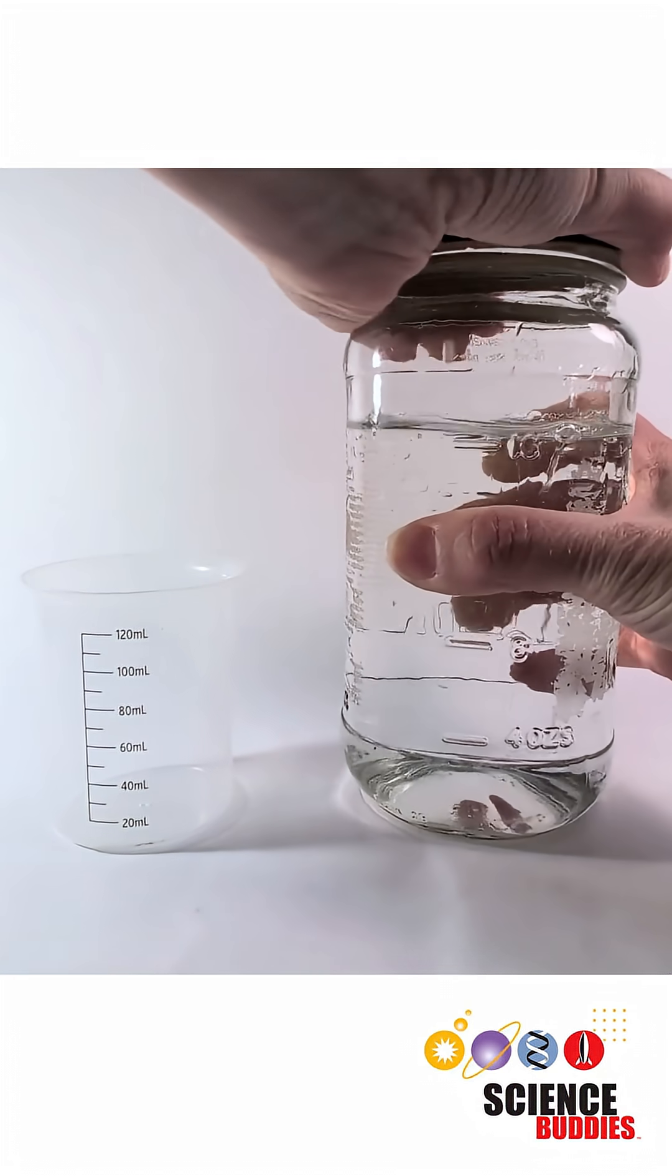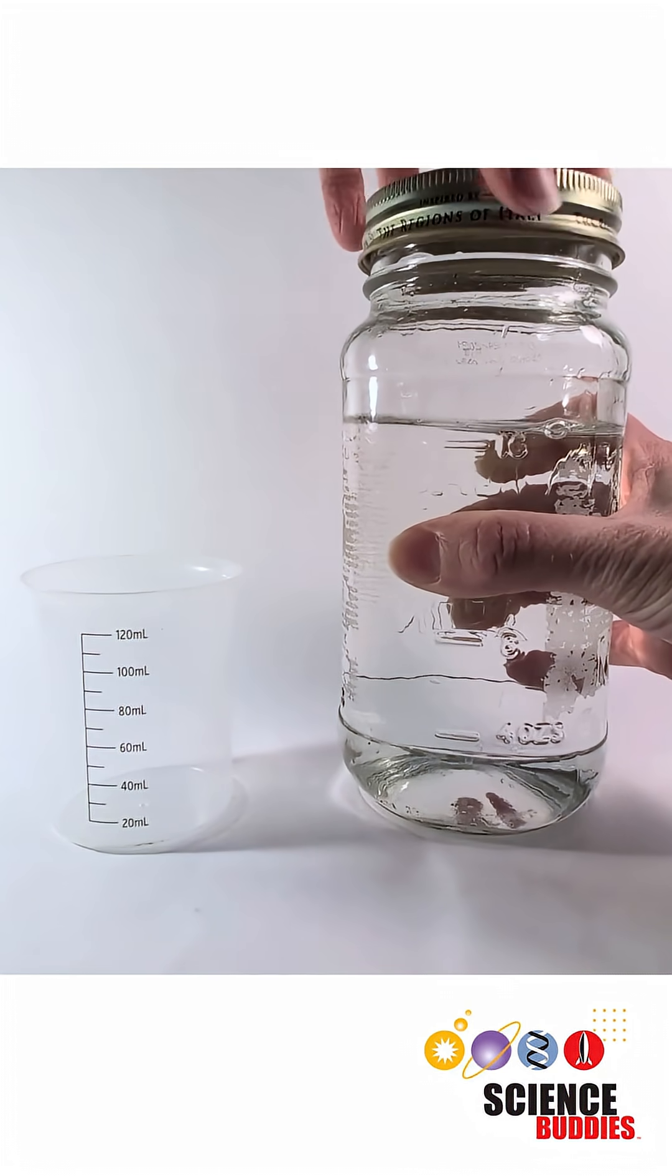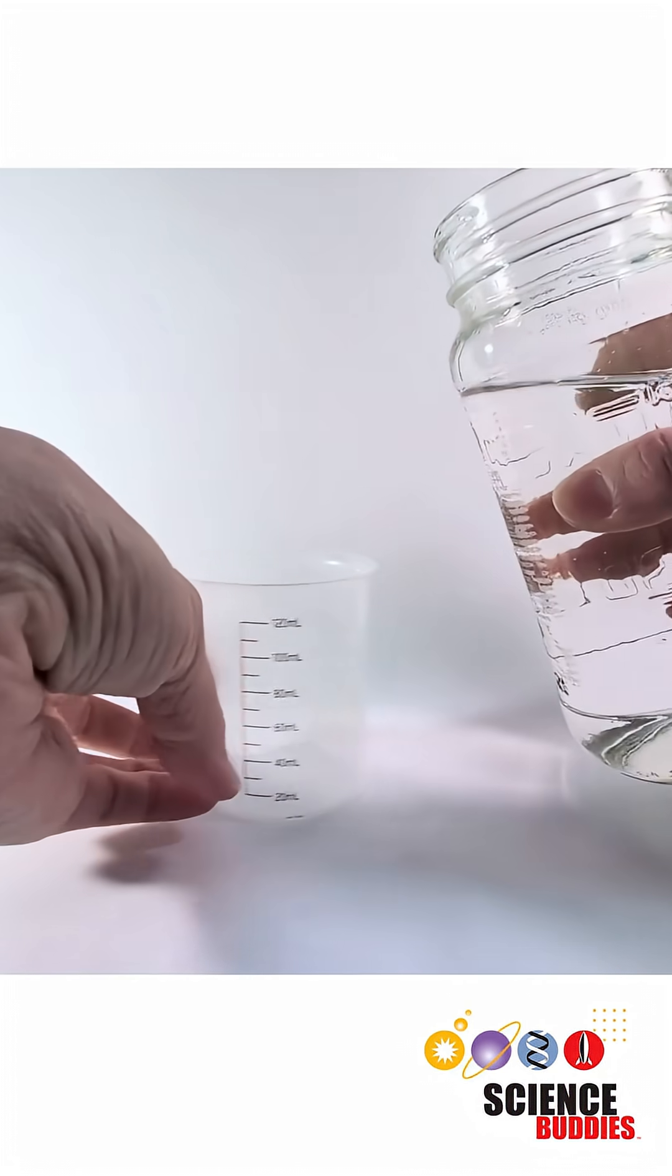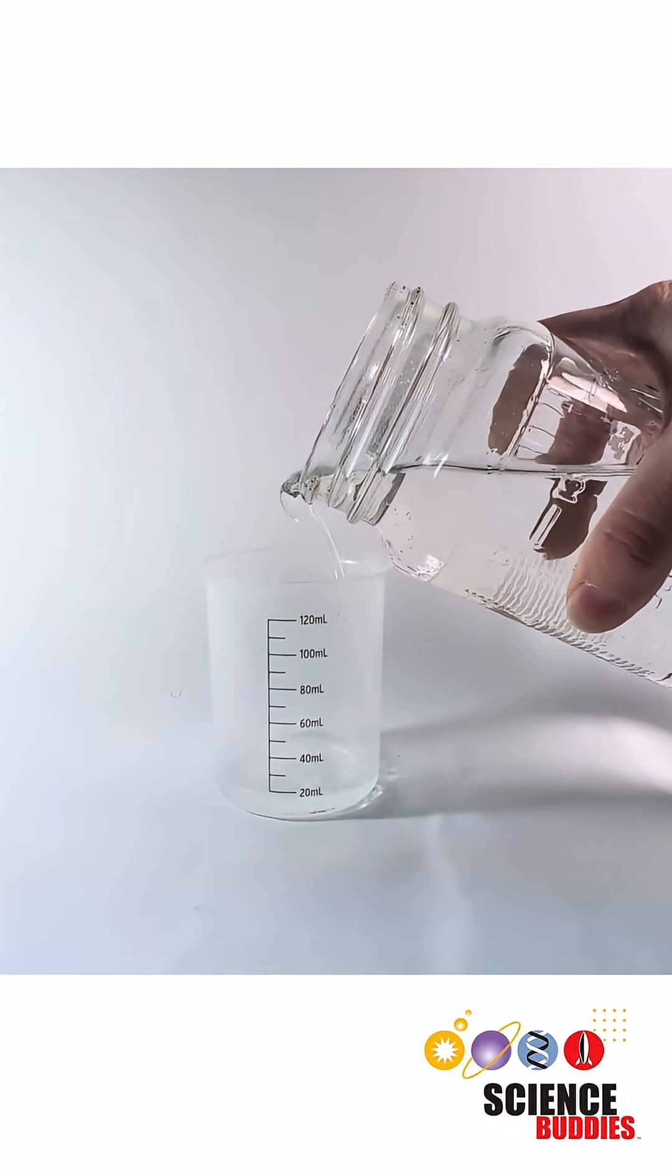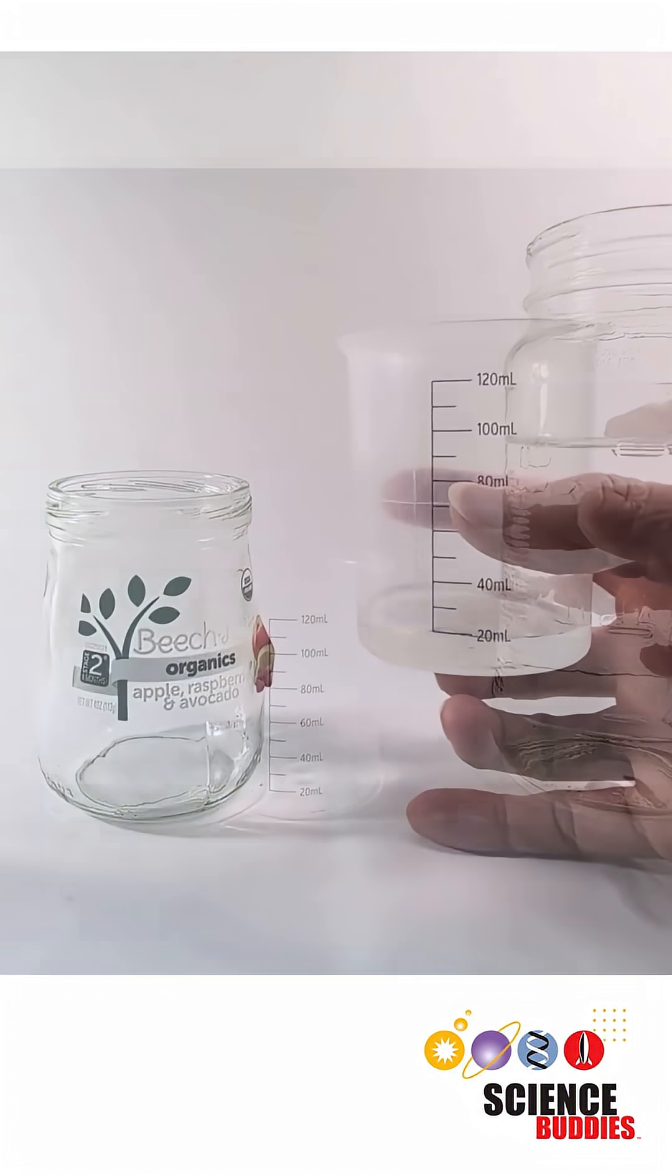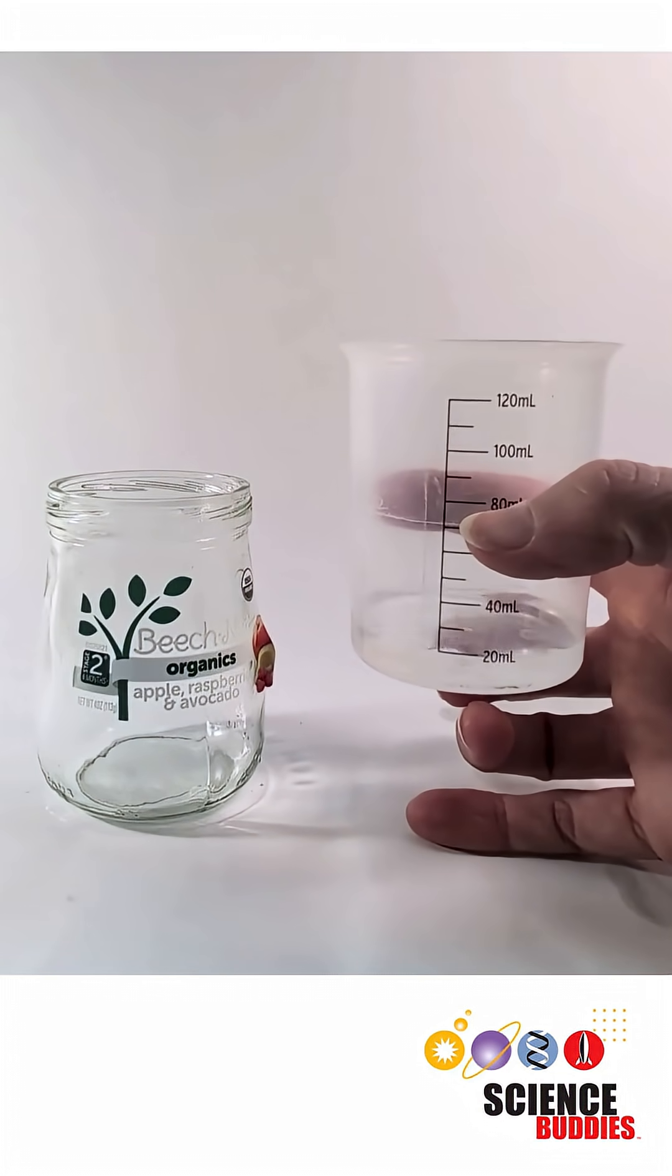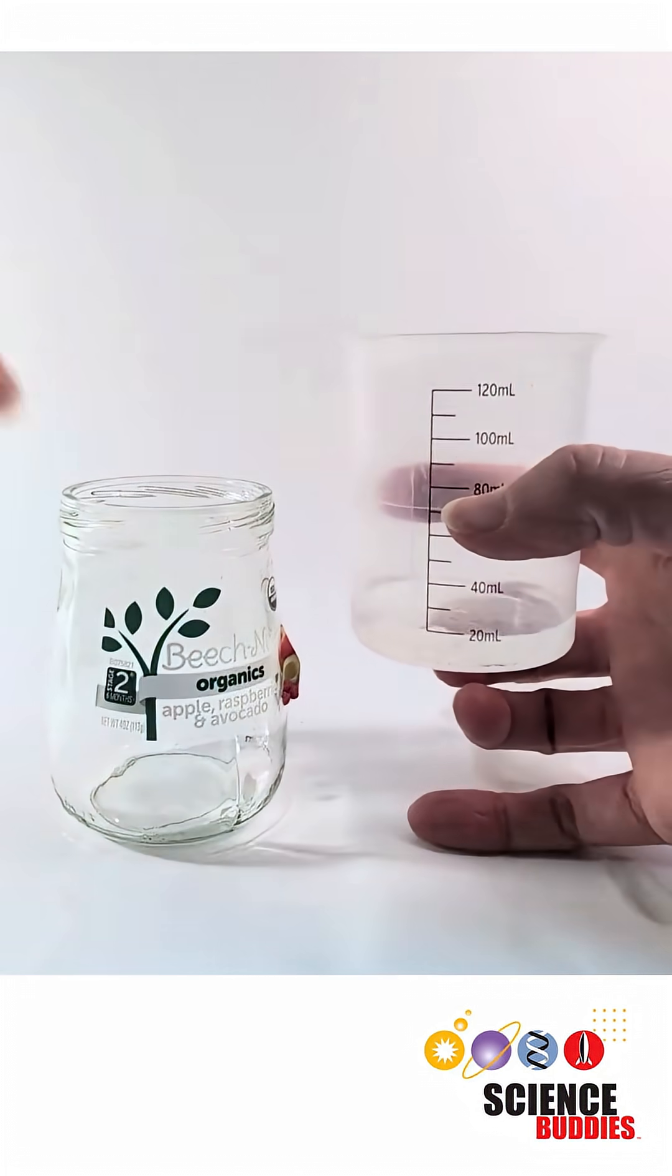Once you have your water sample you'll want to measure out 20 milliliters, which is not very much. So take your 20 mils of water sample and go ahead and put it in one of the jars.